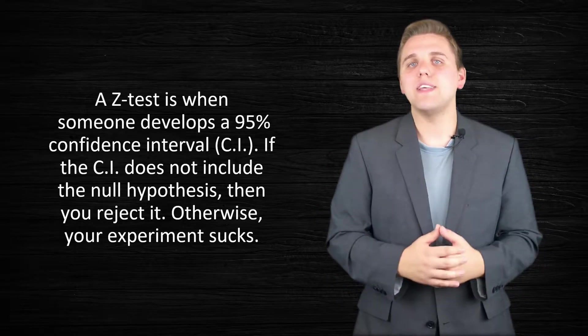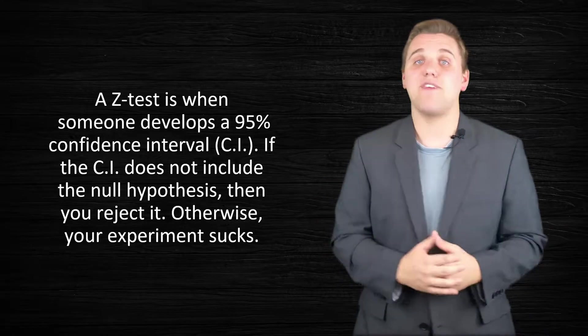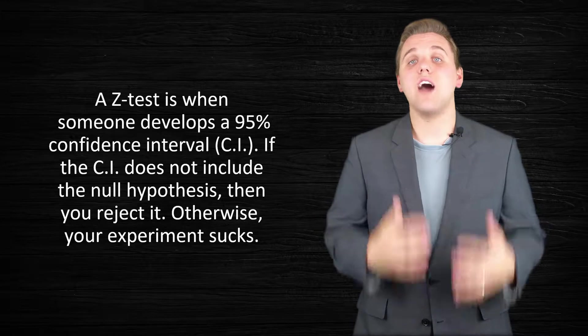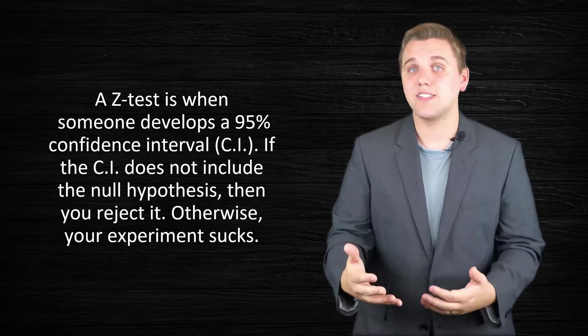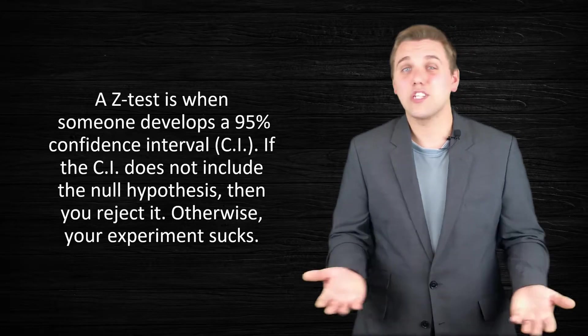Now, let's finally address what a Z-test is. Now, here's how this works. Whenever you're presented with a claim about what an average is, you might want to conduct a Z-test to say, I'm a little skeptical about that claim. So whenever someone is skeptical of a claim, what they can do is they can conduct a Z-test, which basically means that they're going to construct a 95% confidence interval. Now, if that 95% confidence interval does not include the claim or the null hypothesis, then we should reject that null hypothesis. Otherwise, your experiment kind of sucks.